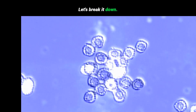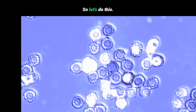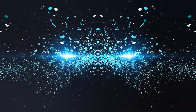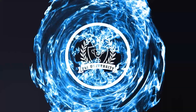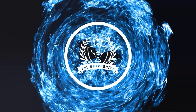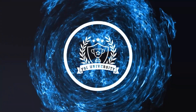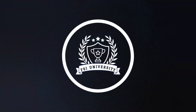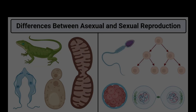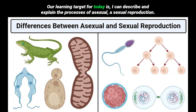Let's break it down. Our learning target for today is: I can describe and explain the processes of asexual and sexual reproduction.